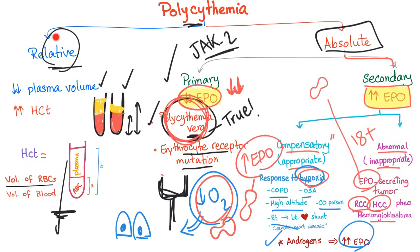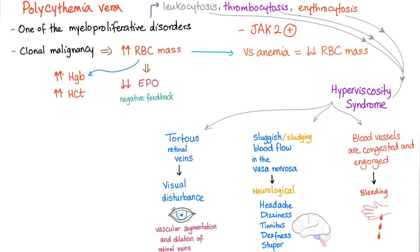In summary, polycythemia could be relative — due to decreased plasma volume — or absolute, with two types: primary (mutation, cancer) and secondary (increased EPO). Secondary has two subtypes: inappropriate due to tumors, and appropriate as a response to hypoxia. Polycythemia vera is one of the myeloproliferative disorders, which means white blood cells, thrombocytes, and erythrocytes are all going to be high in number.